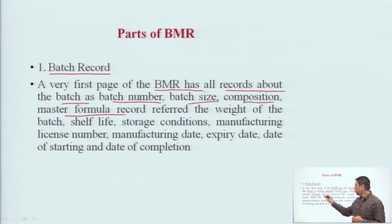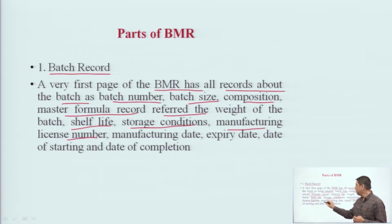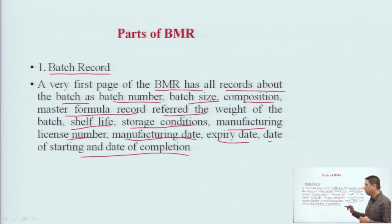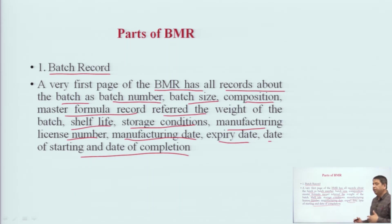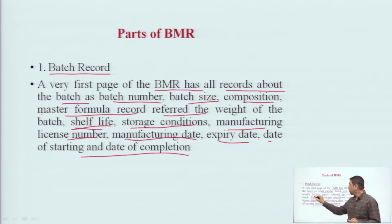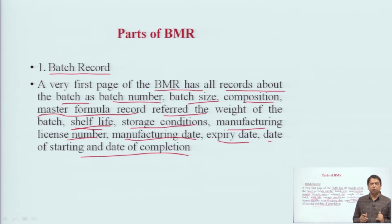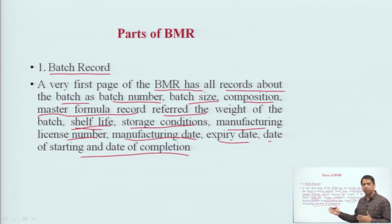The first page includes: batch number, batch size, composition, reference to the Master Formula Record with weights of the batch, shelf life, storage conditions, manufacturing license number, manufacturing date, expiry date, and date of starting and date of completion. The important information here includes which batch it is, its batch number, manufacturing date, expiry date, and which Master Formula Record was referred to in order to make it — so that anyone can clearly understand which batch's BMR this is.